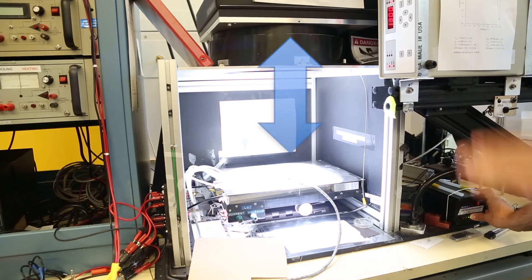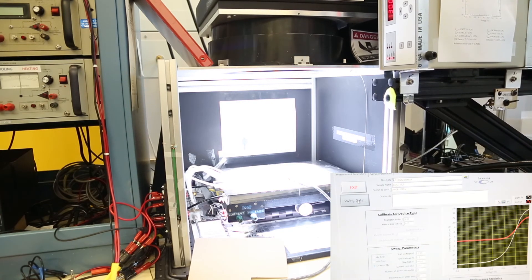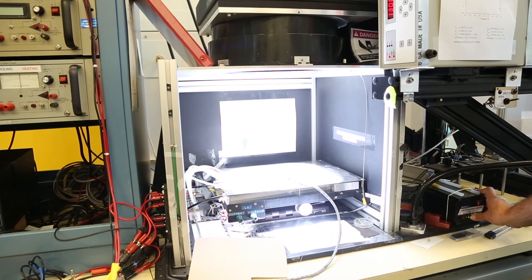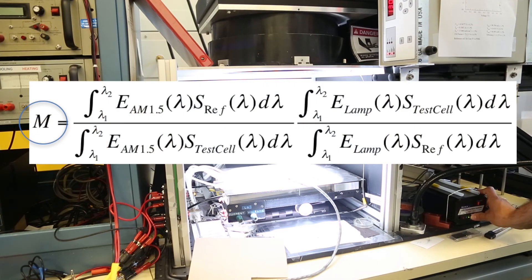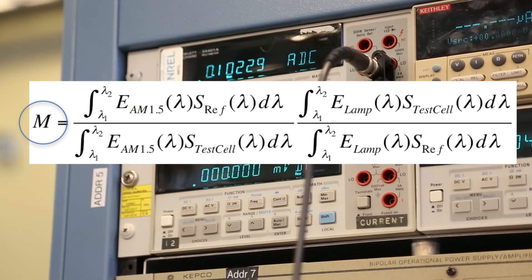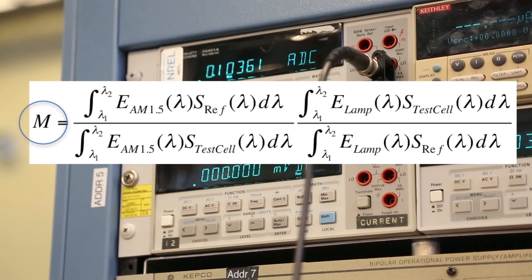Now we can measure the short circuit current of the test cell using the light source you have. Then we calculate the spectral mismatch factor M by plugging the values from the previous step as shown in the equation here. Ideally, M should be as close to unity as possible.